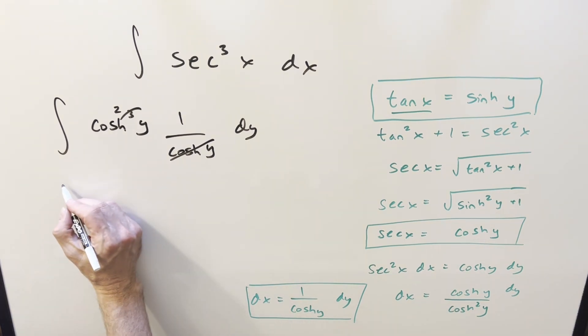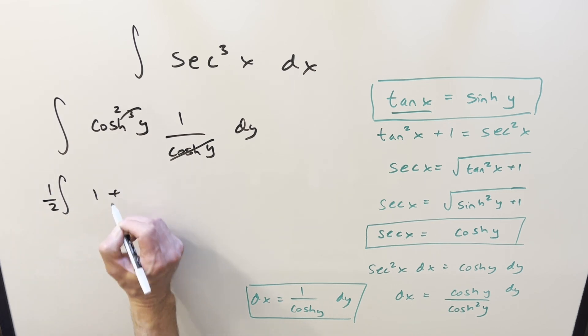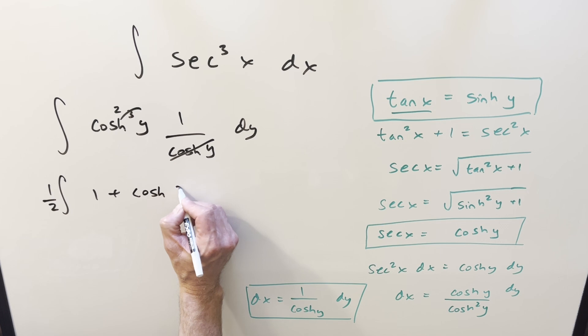For this, I can just use the identity. It's the same as the regular cosine identity. So it's going to be one half in front, one plus cosh two y dy.